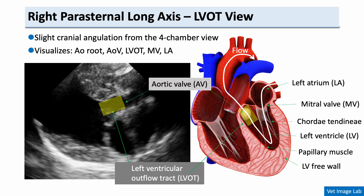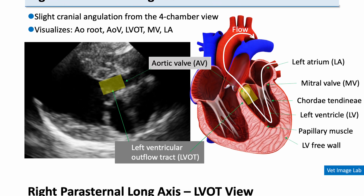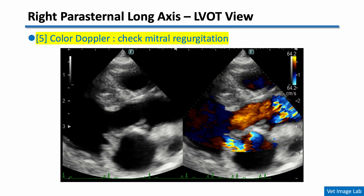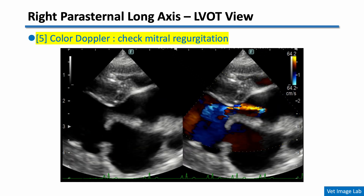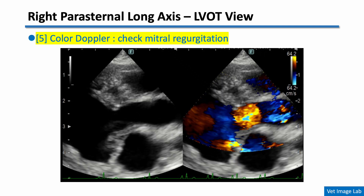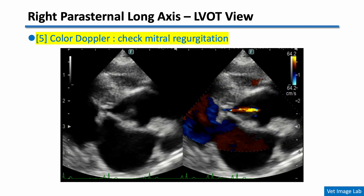Now let's take a look at the right parasternal long axis LVOT view. This view is obtained by applying a slight cranial angulation from the four-chamber view. This window clearly shows the aortic root, aortic valve, left ventricular outflow tract, mitral valve, and left atrium. In this LVOT view, just like in the four-chamber view, you can also evaluate mitral regurgitation using color Doppler. The regurgitant jet is again visible as a mosaic flow into the left atrium.